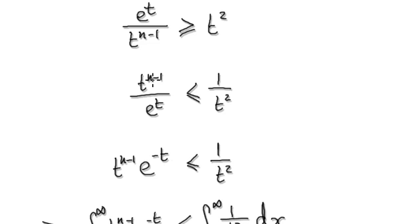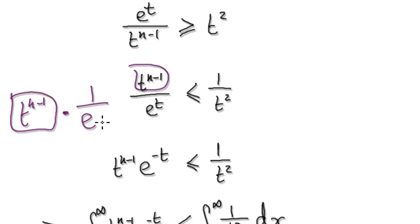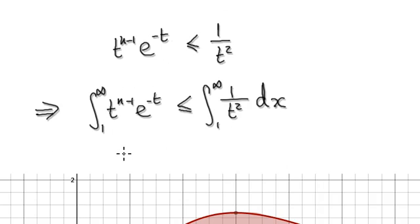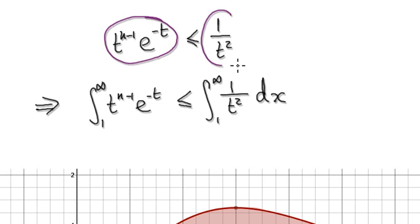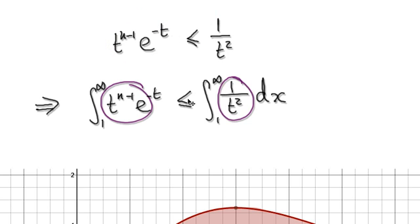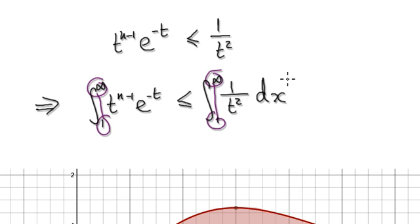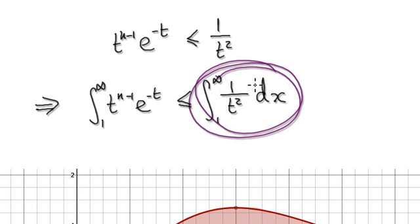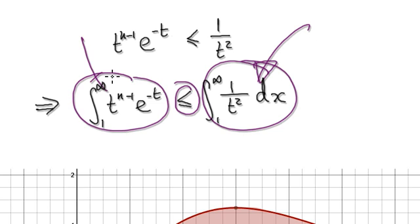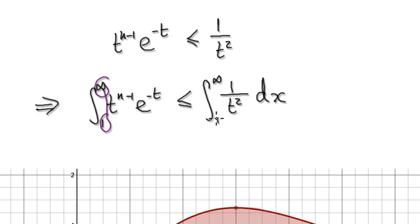Now visualize the integrand as t to the n minus 1 — that's one block — times 1 over e to the power of t. And 1 over e to the power of t is really this thing here. Now, 1 over t squared is always bigger or equal to this integrand. So if we take the integral of both from 1 to infinity, and we know 1 over t squared converges, then the integrand will also have no choice but to converge from 1 to infinity.